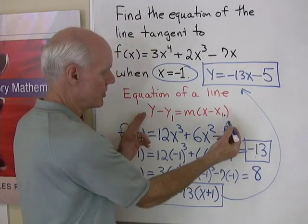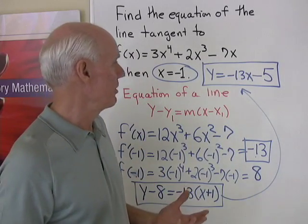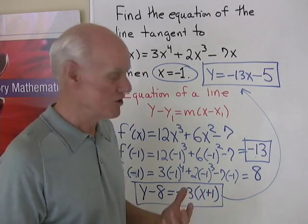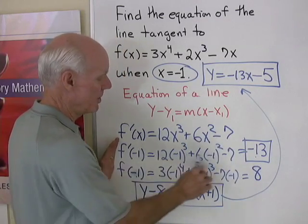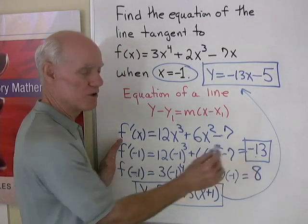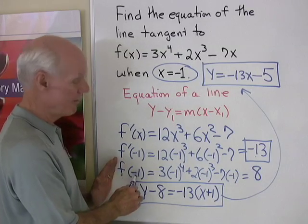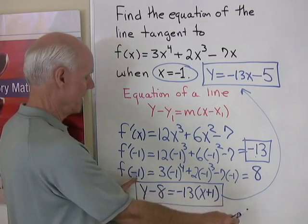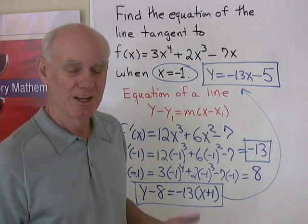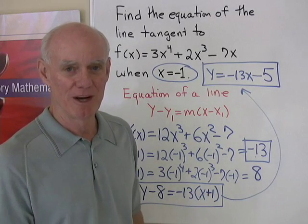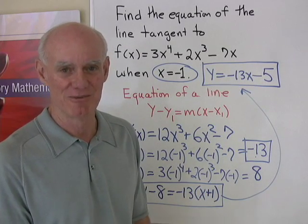When we go about finding the equation of a line tangent to a graph at a certain point, we get the derivative evaluated at that point — there's the slope of the line. We take the function itself and evaluate it at that point, and we get the x and y-coordinate of that point on the line. That's how we find the equation of a line tangent to a graph at a certain point.